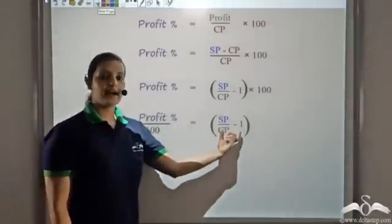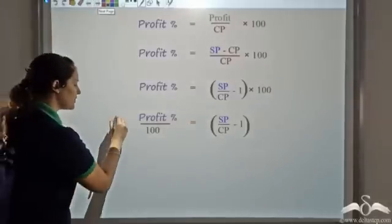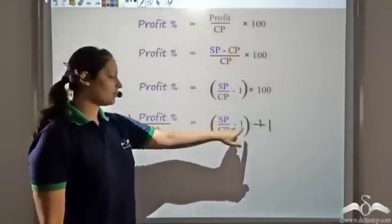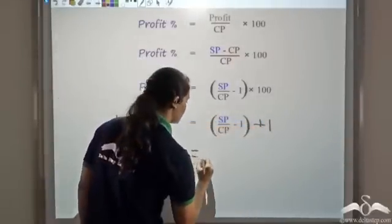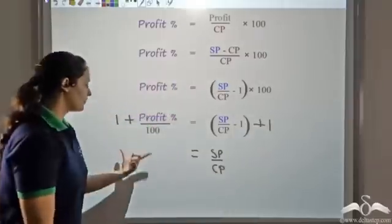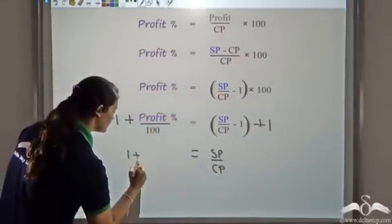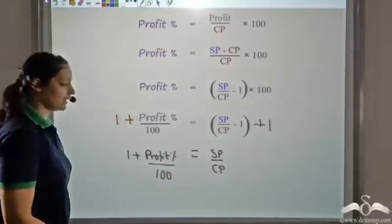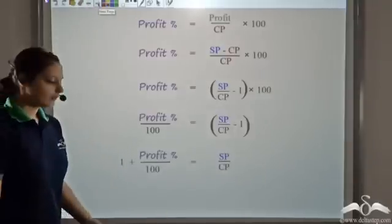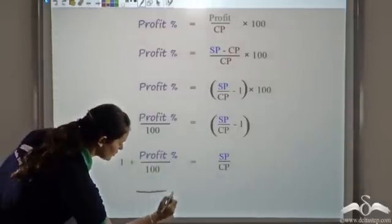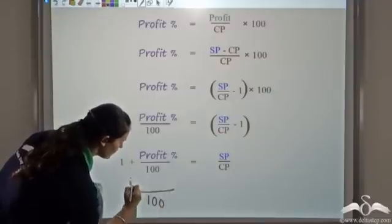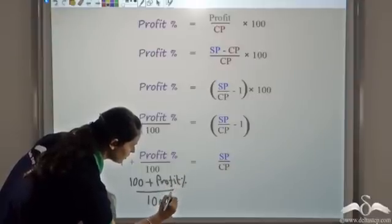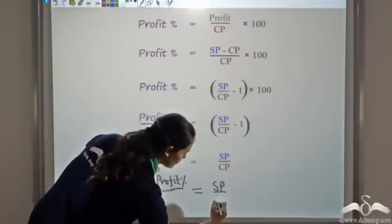Now, if I add 1 on both sides, the equality would not change. So adding 1: SP upon CP minus 1 plus 1 becomes SP upon CP. On the other side, this becomes 1 plus profit percent divided by 100. Taking LCM as 100, this becomes (100 plus profit percent) divided by 100. So (100 plus profit percent) divided by 100 equals selling price upon cost price.